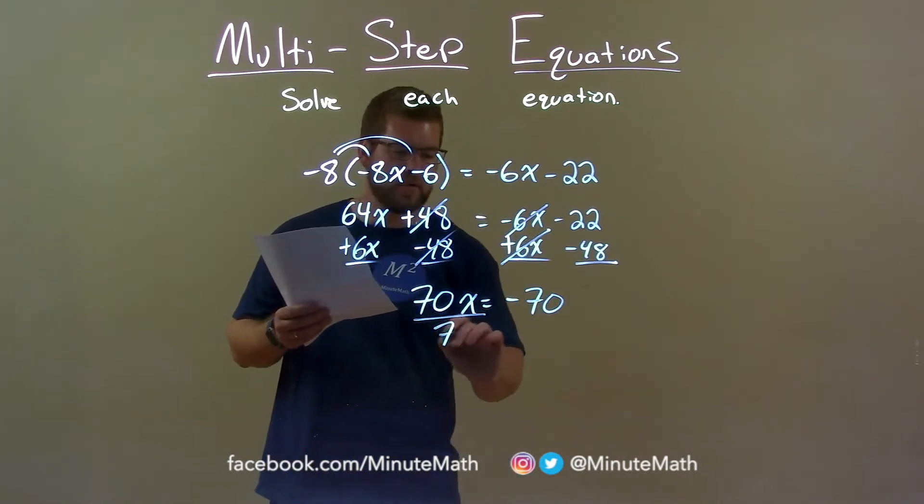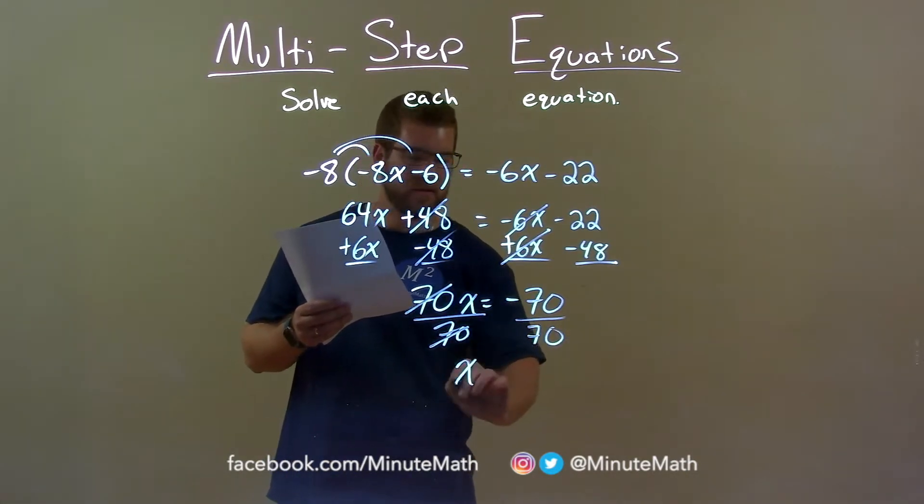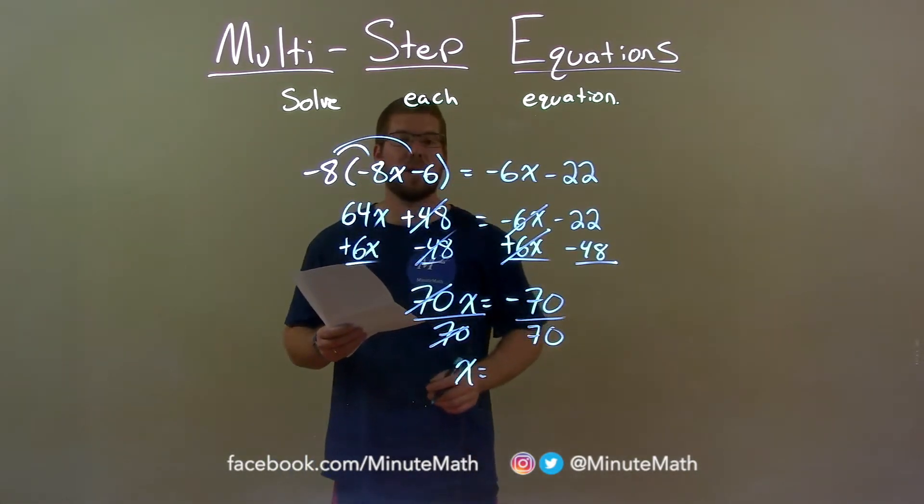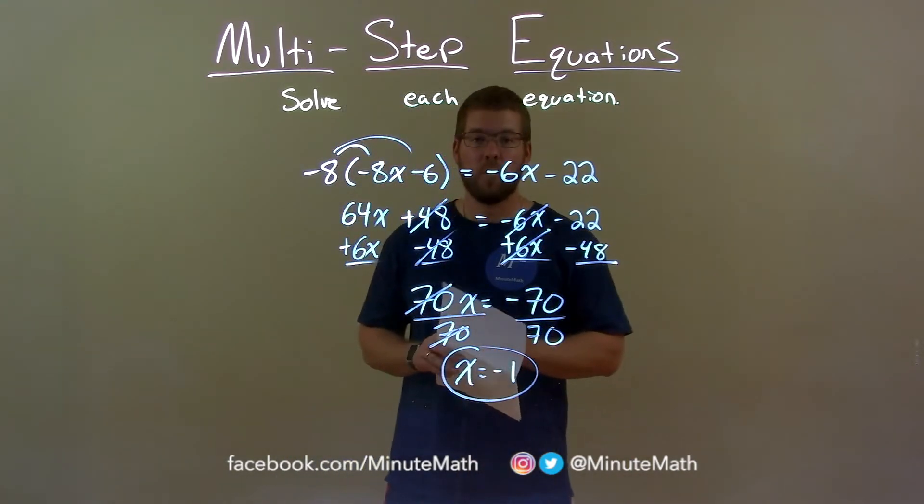I divide 70 to both sides. This gives me x by itself on the left, and negative 70 divided by 70 is negative 1. And so our final answer is x equals negative 1.